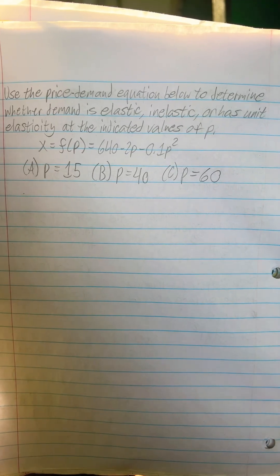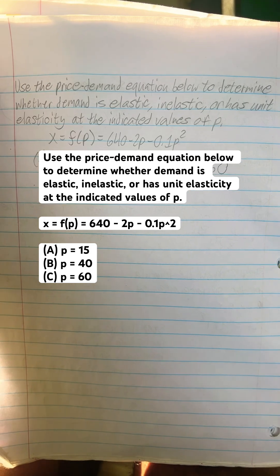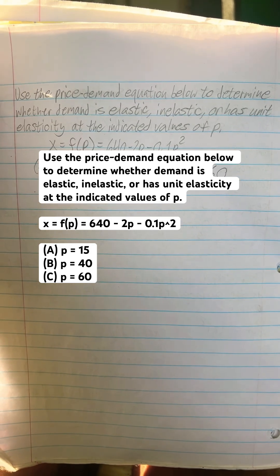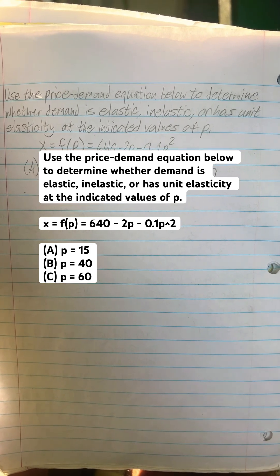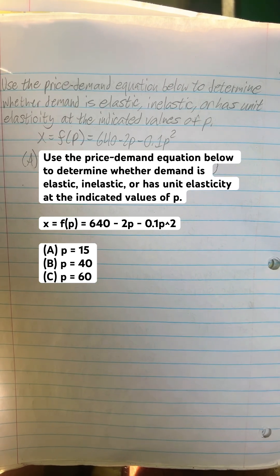Use the price-demand equation below to determine whether demand is elastic, inelastic, or has unit elasticity at the indicated values of P. X is equal to F of P, which is equal to 640 minus 2P minus 0.1P squared.